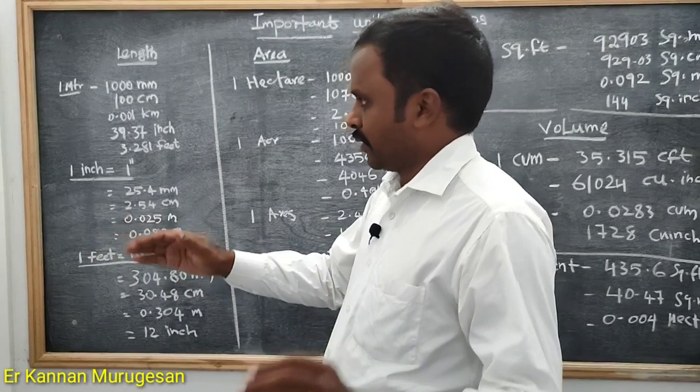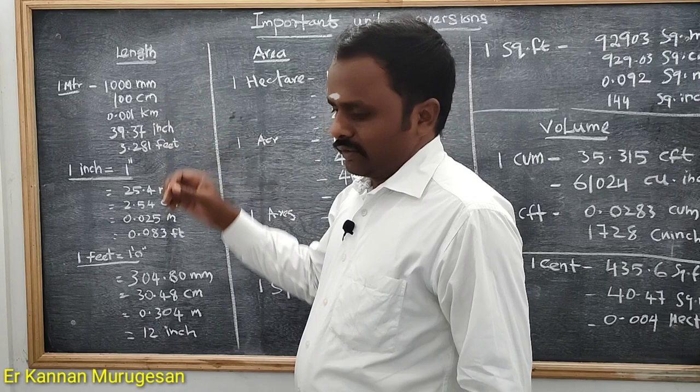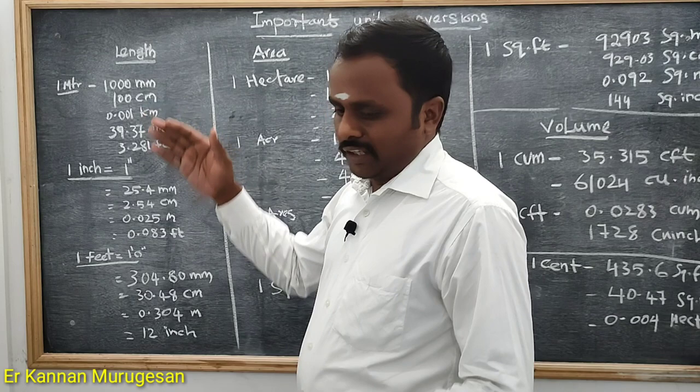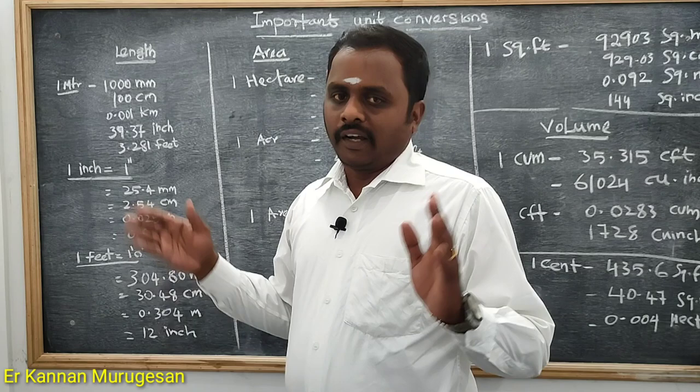1 meter is 1000 mm. 1 meter is 100 cm. 1 meter is 1/1000 of a km. If you have 1.001 km.